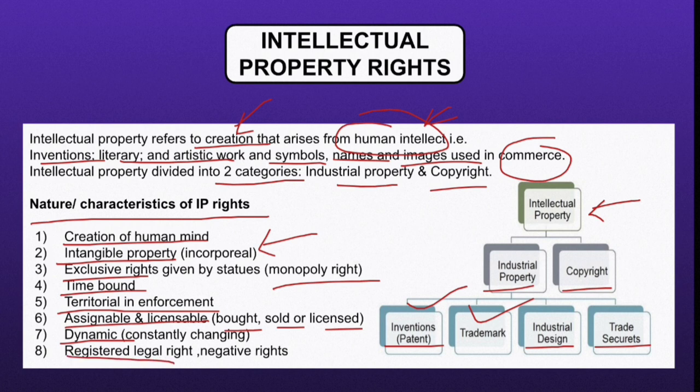Eighth point is registered legal right — these are registered. You have to get them registered. And these are negative rights. Why negative? Because these restrain people from using or drawing any sort of commercial benefit from the same. If I wrote a book and someone else is using my book in their own name, I can restrain them from using it. That is why it is called a negative right — I am stopping someone.